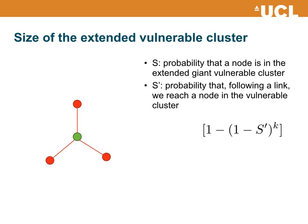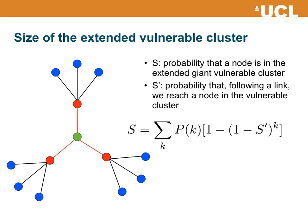The quantity 1 - S' is the probability that by following a link we do not reach the vulnerable cluster. So (1 - S')^k is the probability that the node of degree k is not connected to the vulnerable cluster through any of its links. Therefore, 1 - (1 - S')^k is the probability that the node has at least one neighbor in the vulnerable cluster. This is conditional on the node having degree k; for the unconditional probability, we average over the degree distribution p(k). This gives us the equation satisfied by S — the probability that a node is in the extended vulnerable cluster.